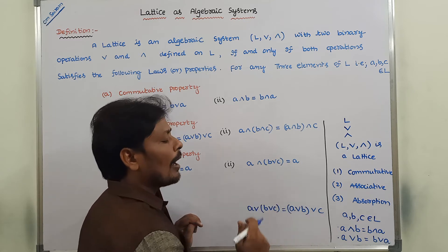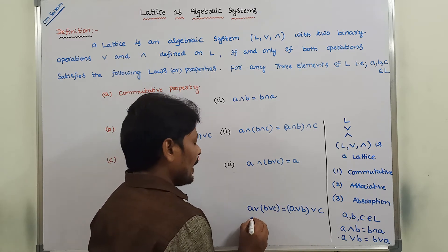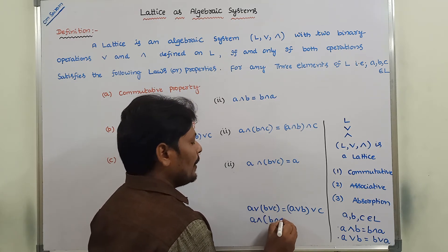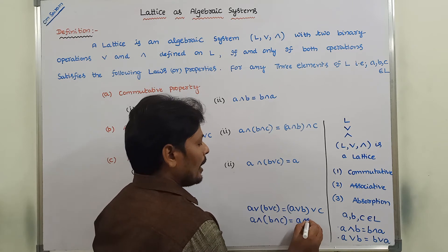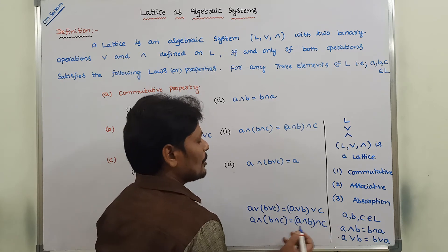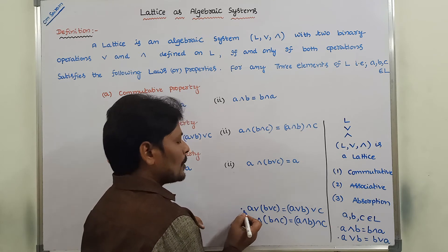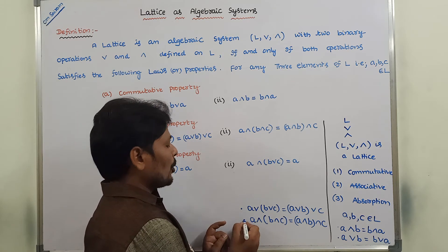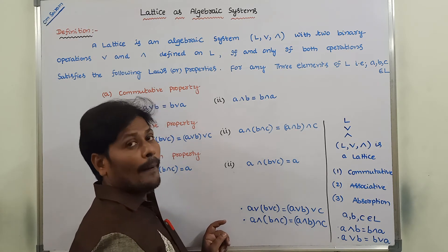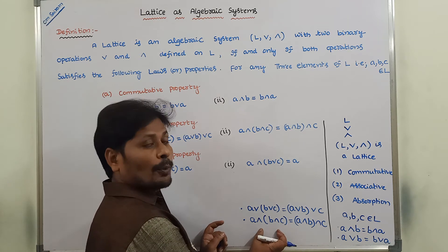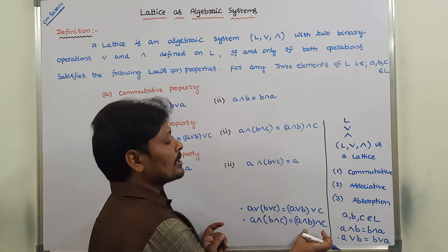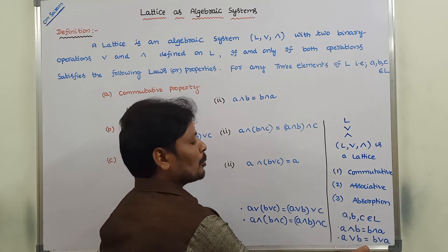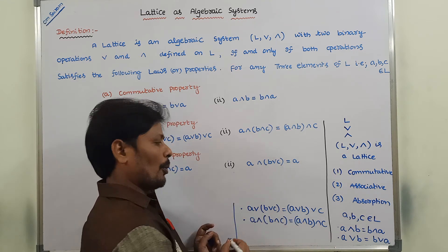In the same way, according to the meet operation, A meet (B meet C) is equal to (A meet B) meet C. This is the associative property with respect to the meet operation. Whatever result we get at the LHS, the same result we get at the RHS. So this is the commutative property and this is the associative property.